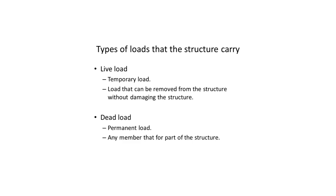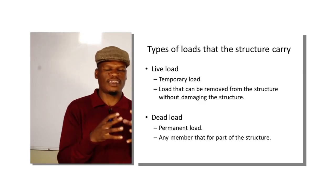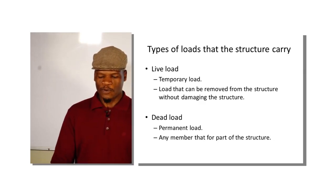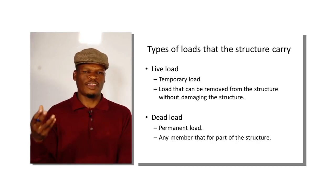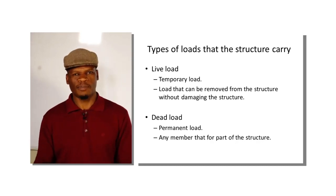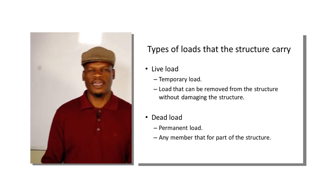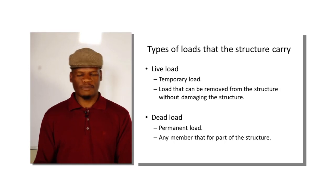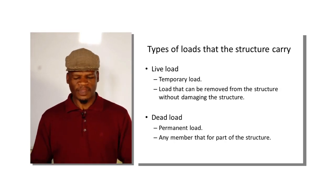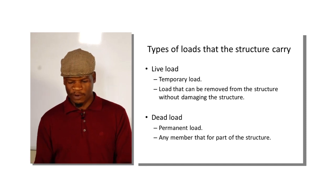We must consider the types of load that need to be carried by the structure. There are two types: live load and dead load. The live load is every material that is temporary on the structure — if it is taken out, the structure can still sustain its stability. For example, like a jacket I can put on and take off without any effect. In construction, rain, wind, and storms are live loads because they come and disappear.